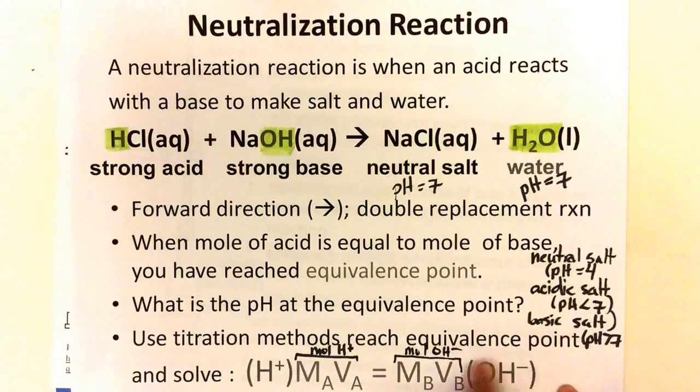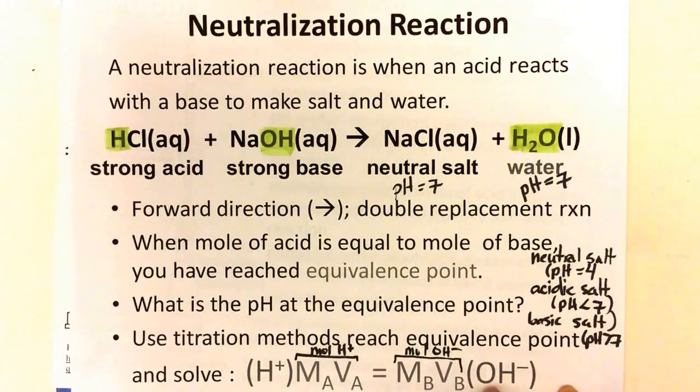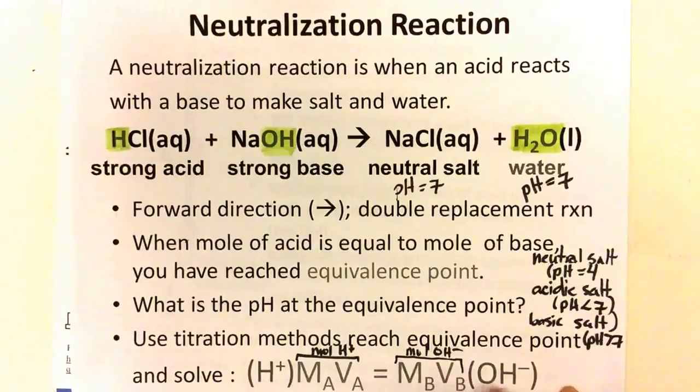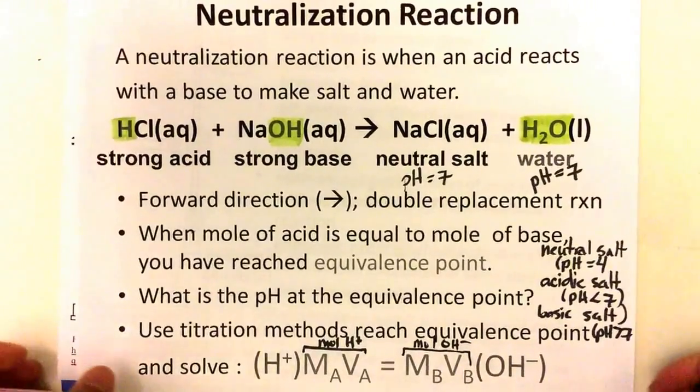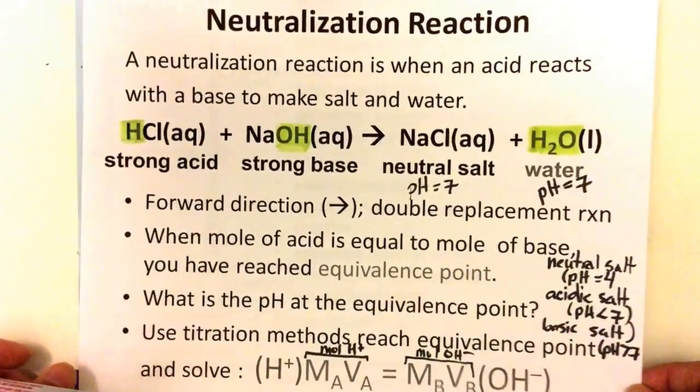Likewise, this tells you how much hydroxide ion that base can contribute. So if the base is monobasic, it's just one. If it's dibasic, two. If it's tri-basic, you multiply this side by three. We'll see some examples when we get into it.